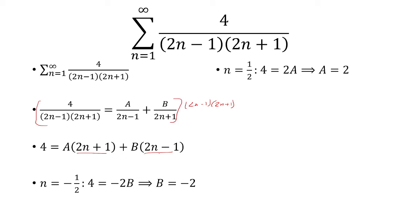Now we move on to the second parentheses. When is 2n minus 1 equal to 0? That's when n equals 1 half. So we can ignore this second term. So we have 4 equals 2A, and so A is equal to 2.